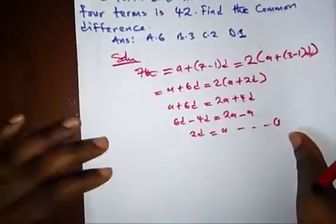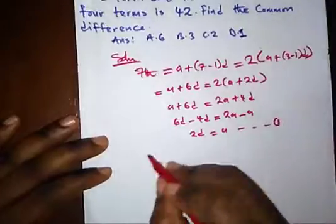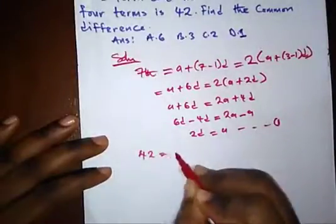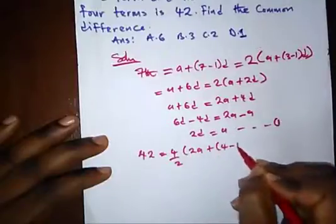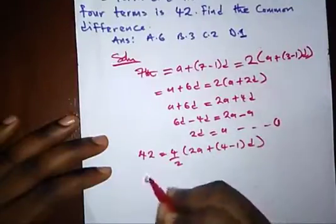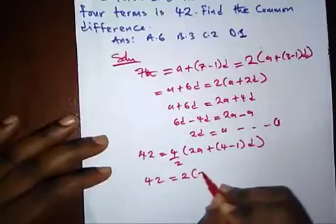And they say that the sum of the first 4 terms is 42. 4 over 2 bracket 2A plus bracket 4 minus 1 D. That's 42 equal to 2 bracket 2A